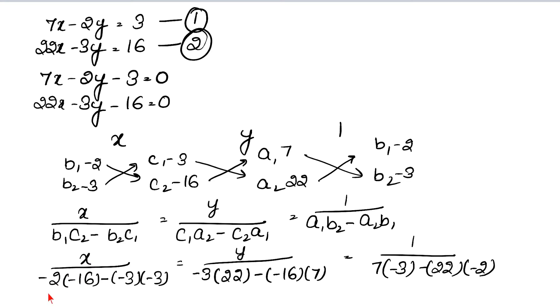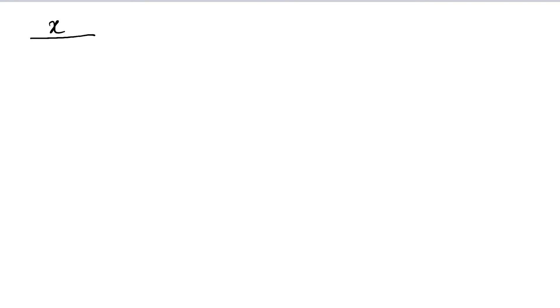Let's see: x upon — 2 into 16 is 32, and this is plus, and minus minus gives plus, minus minus 9. So 32 minus 9. We write: x upon 32 minus 9 equals y upon...